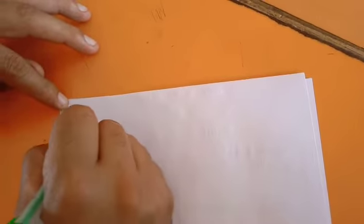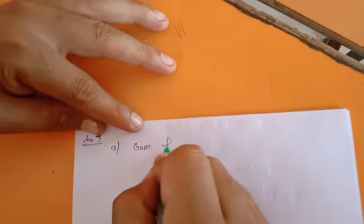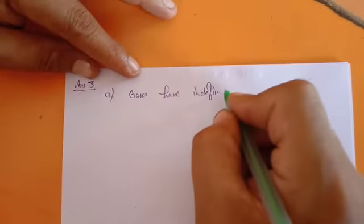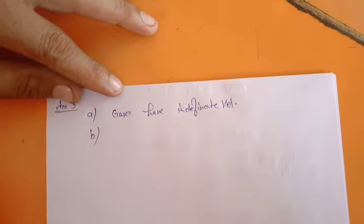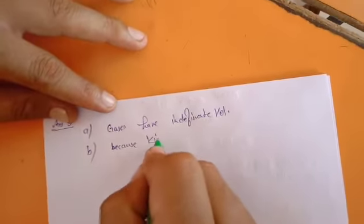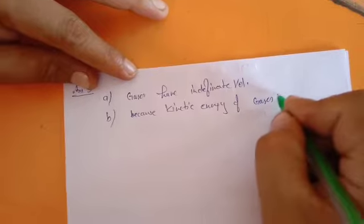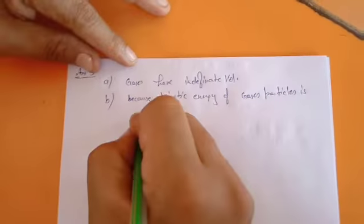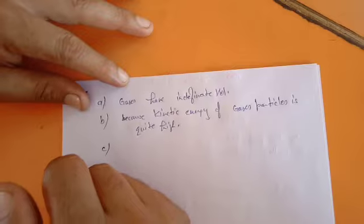Now answer three asks you to give two reasons for each sub-part. Part A: a gas fills completely the vessel in which it is kept. This shows that gases have indefinite volume — because gases have indefinite volume, they acquire almost all the volume of the container. Part B: a gas exerts pressure on the walls of the container — because the kinetic energy of gas particles is quite high.